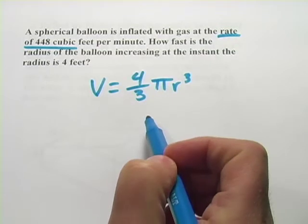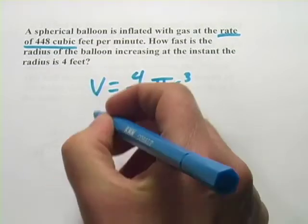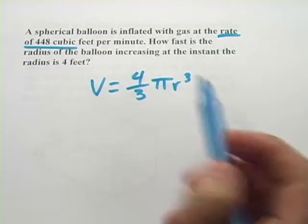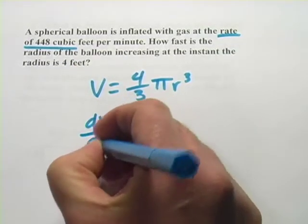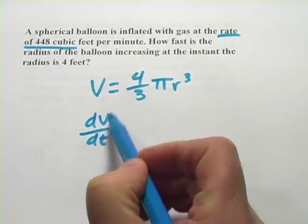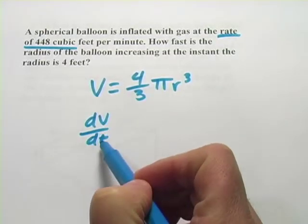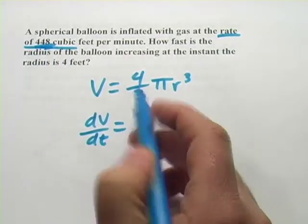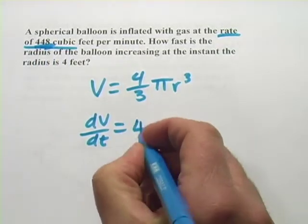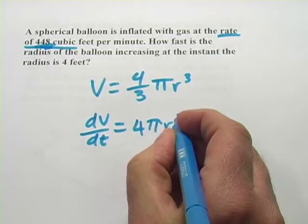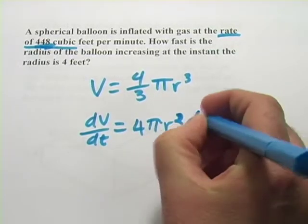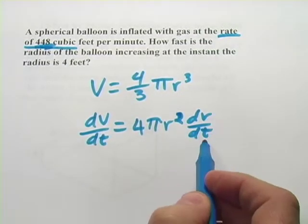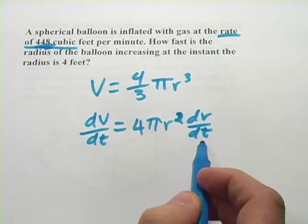And then we're going to go ahead and take the derivative. When I do that over here, I'm going to get, and again I'm going to do this with respect to time, because this is a process that's happening over time. I get dv dt, the rate that the volume is changing with respect to time, and that is this. So that's good already. And then let's see, the 3's would cancel, we get 4 pi r squared dr dt. dr dt is the rate that the radius is changing with respect to time, and that's what we're going to want to find.